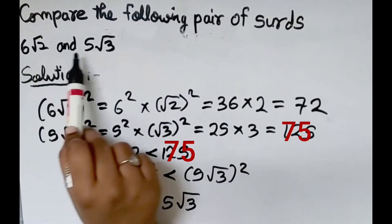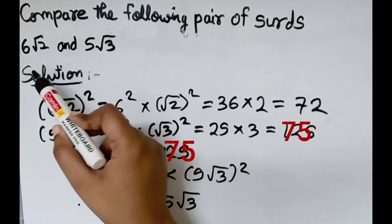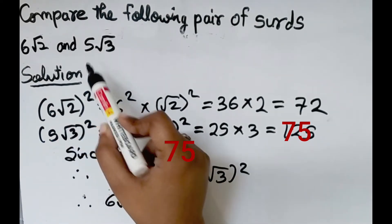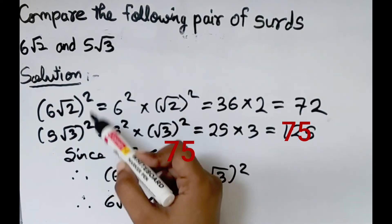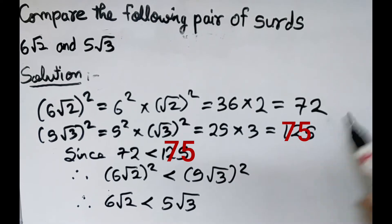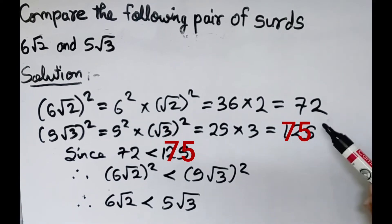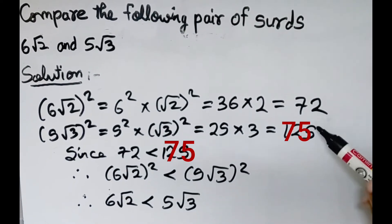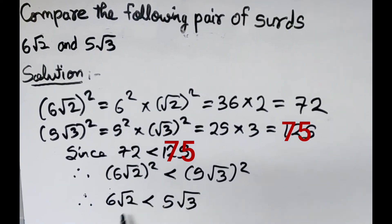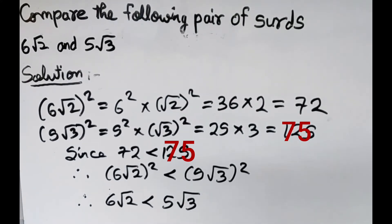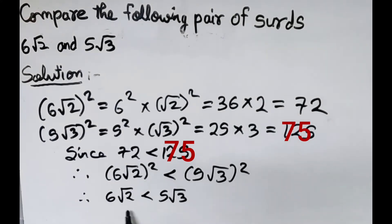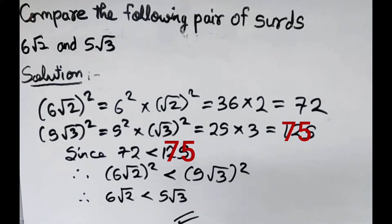For comparing surds with a square root sign, whenever there is a square root sign, we can take the square of both numbers, compare the results, and use that to compare the original surds. So this is the second method, and this is the final answer.